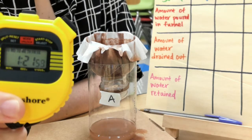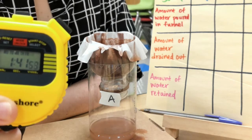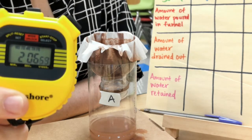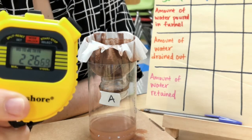Step number seven, start timing this process with a stopwatch as soon as you pour the liquid water into the funnel. So, you're going to push start on your timer as soon as you start pouring.